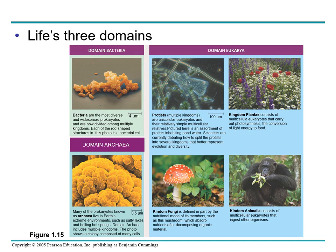Domain eukarya consists of protists, plantae, animalia, and fungi. Kingdom plantae consists of terrestrial multicellular eukaryotes that carry out photosynthesis — the conversion of light energy into chemical energy in food. Kingdom fungi is defined in part by the nutritional mode of its members, such as mushrooms, which absorb nutrients from outside their bodies. Kingdom animalia consists of multicellular eukaryotes that ingest other organisms. Lastly, kingdom protists are mostly unicellular eukaryotes and some relatively simple multicellular relatives. Scientists are currently debating how to classify protists in a way that accurately reflects their evolutionary relationships.